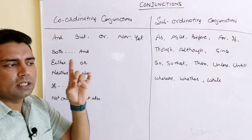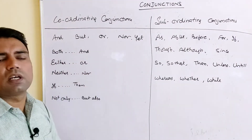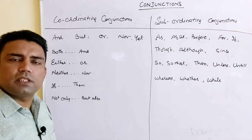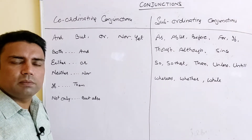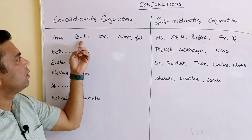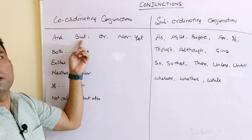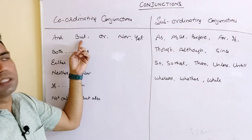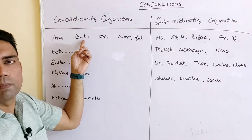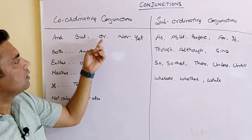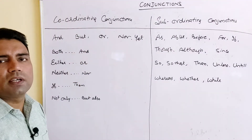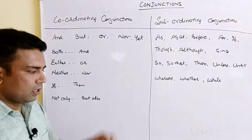A good boy should be studying but he doesn't like that. That is why we are using 'but' here, because both clauses are quite opposite to each other. The third is 'or.' 'Or' is used when we are going to choose anyone out of two, like 'Ram or Mohan can help you,' 'you can bring book or notebook.'